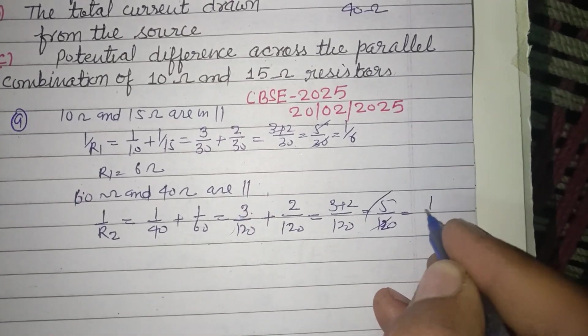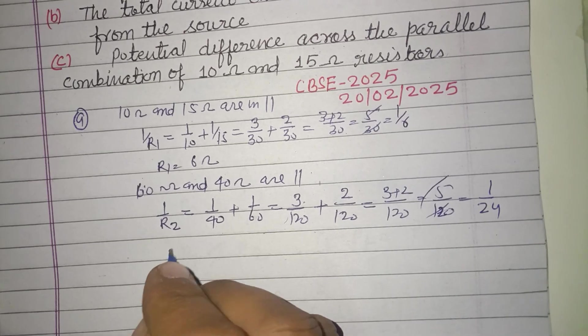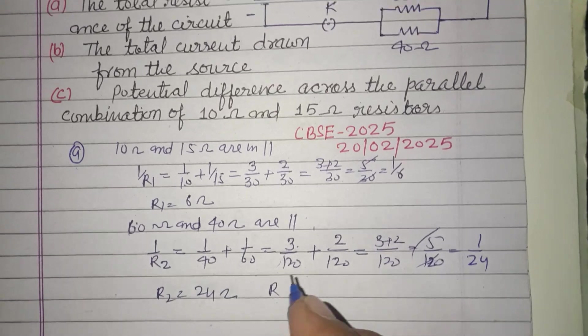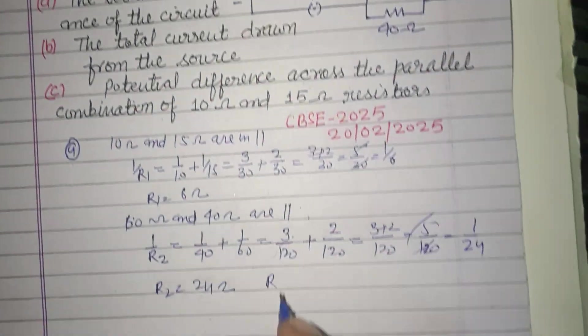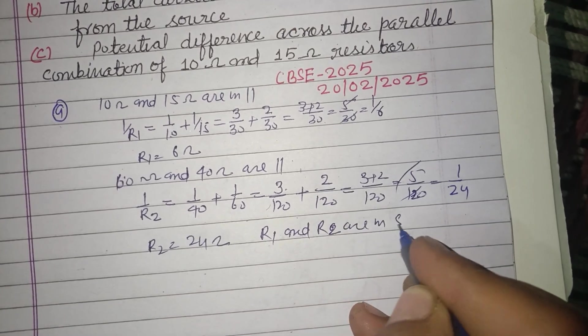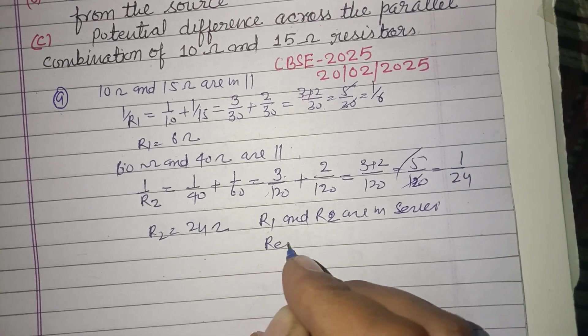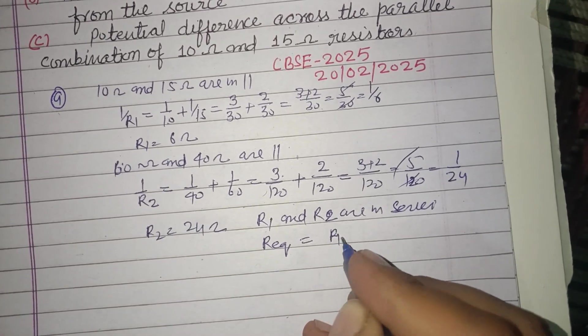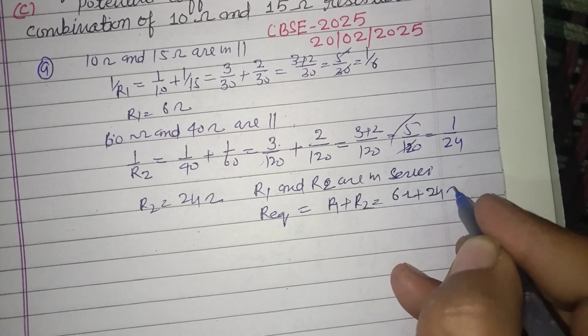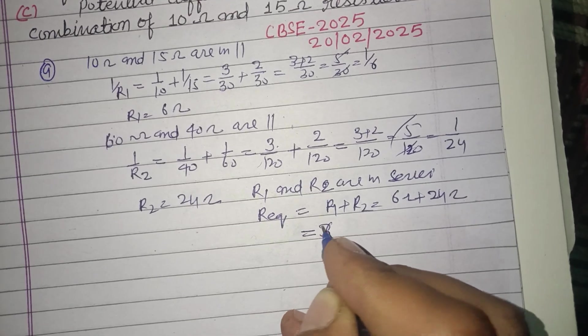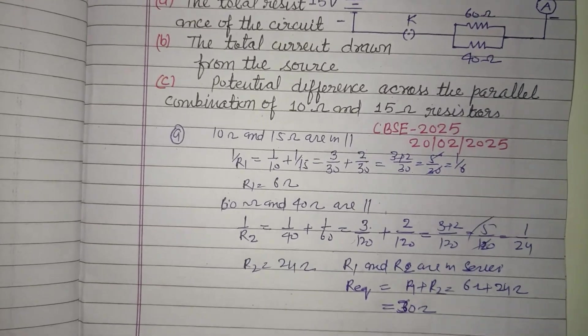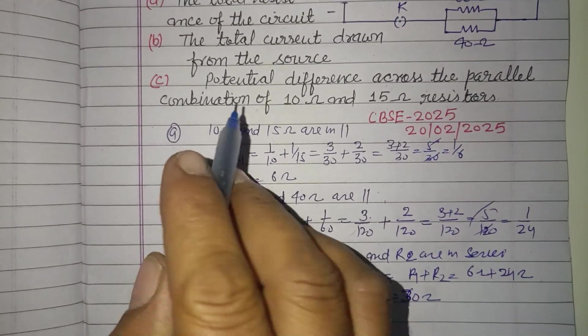So total resistance, now these two R1 and R2 are in series. So R equivalent equals R1 plus R2, that is 6 ohm plus 24 ohm. So this is 30 ohm. 30 ohm is the answer of the first part.